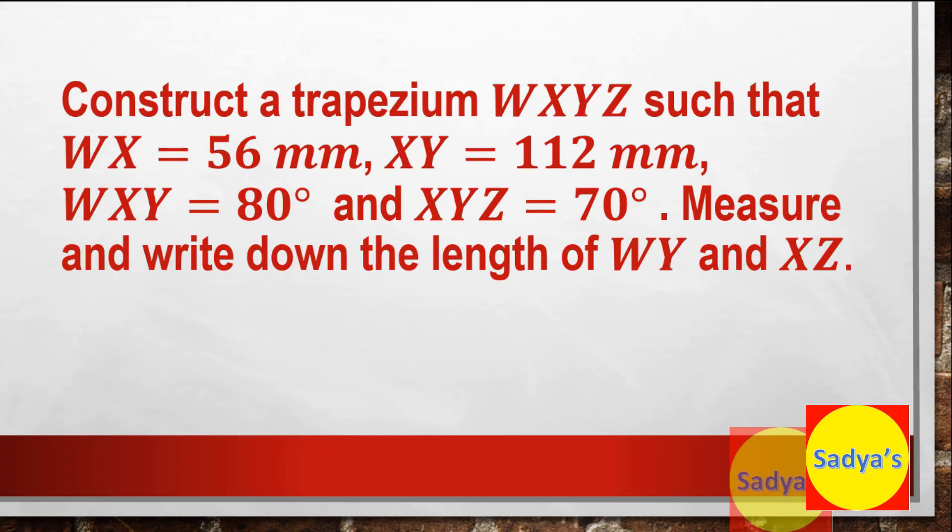The question is: construct a trapezium WXYZ such that WX is equal to 56 mm, XY is equal to 112 mm, angle WXY is equal to 80 degrees, and angle XYZ is equal to 70 degrees. Measure and write down the length of WY and XZ.